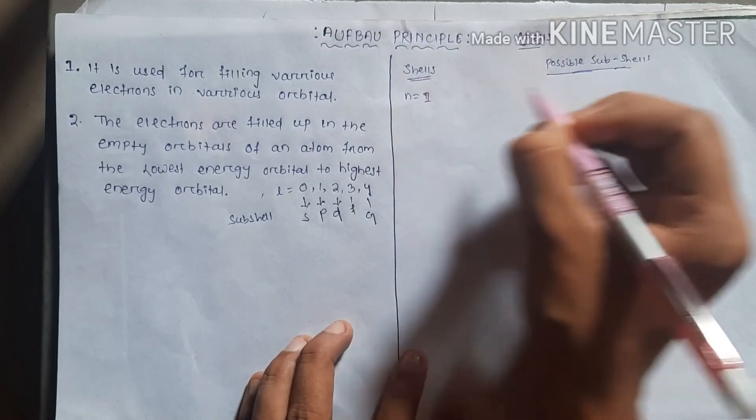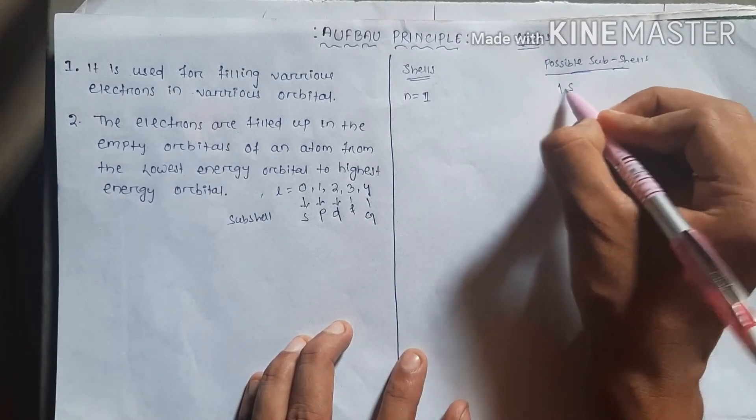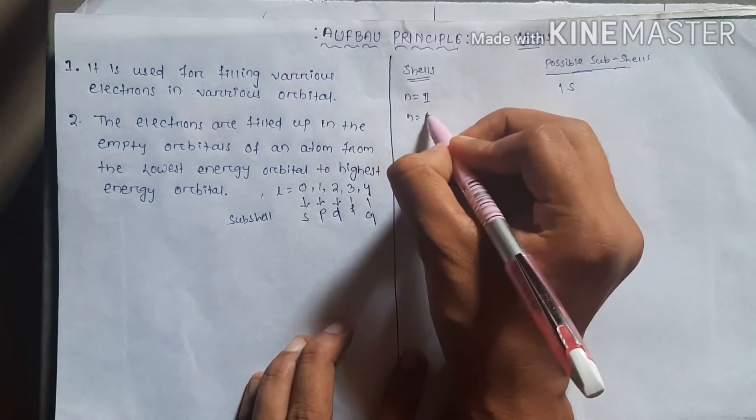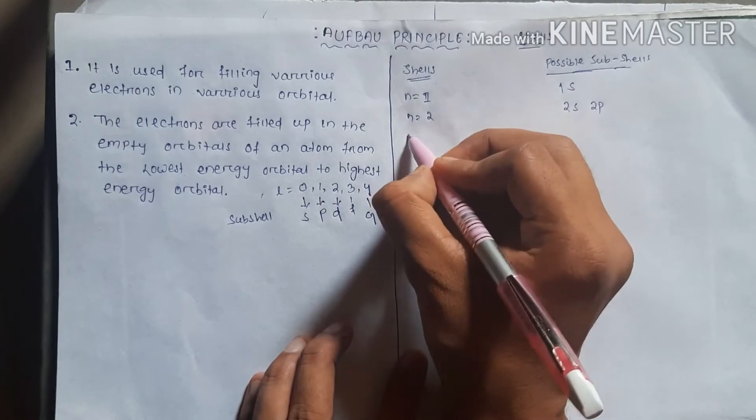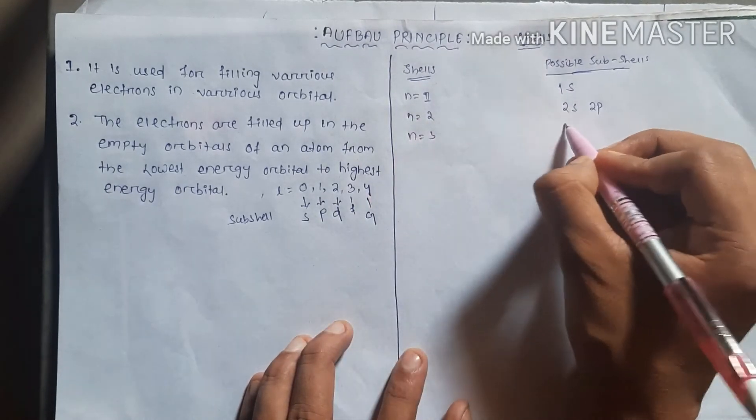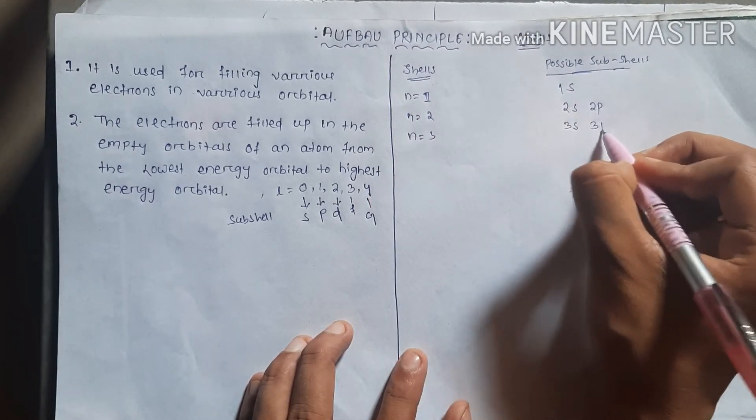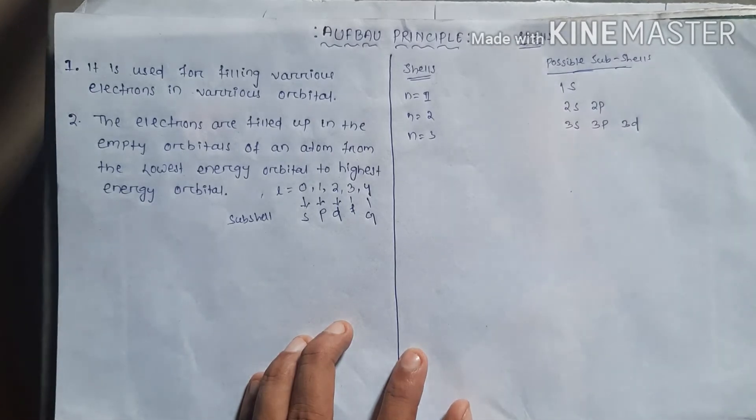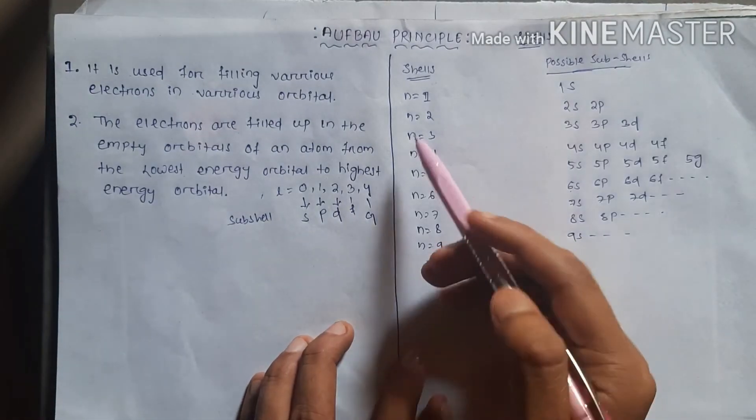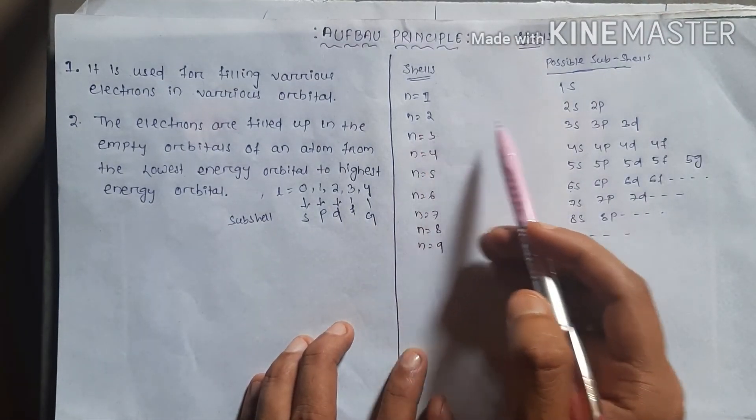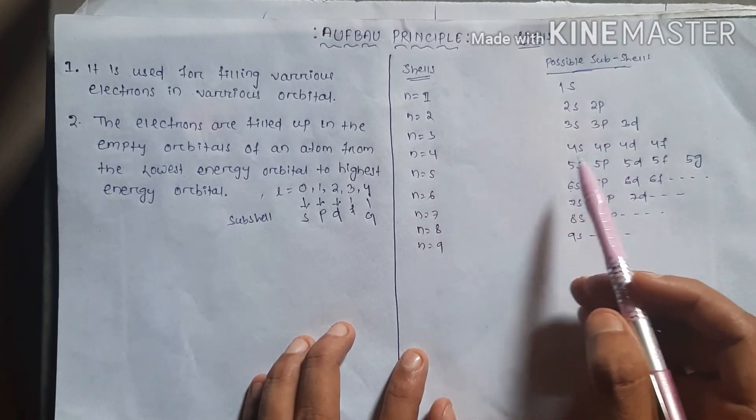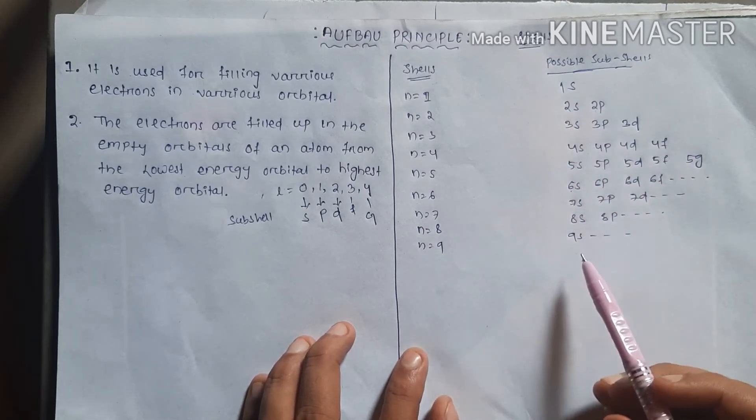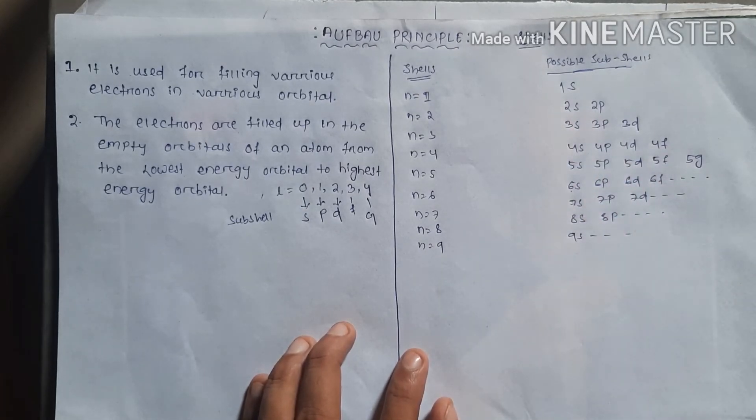If n equals 1, then possible subshell is 1S. If n equals 2, then it will be 2S and 2P. When n equals 3, it will be 3S, 3P, 3D. When n equals 4, it's 4S, 4P, 4D, 4F, and so on. So how do the possible subshells fill up?